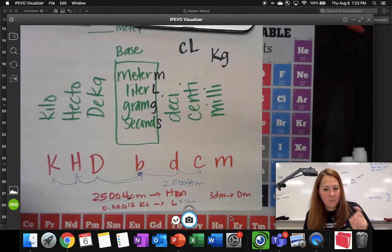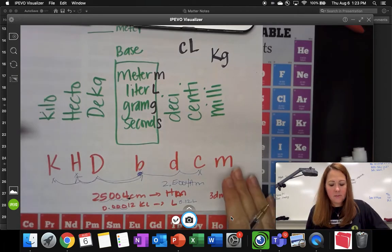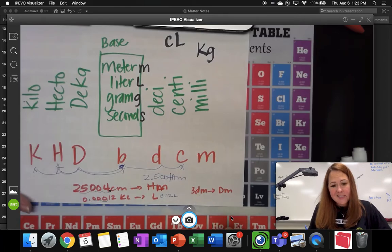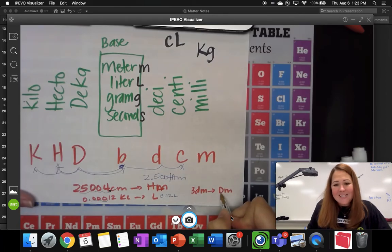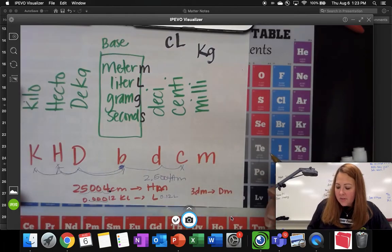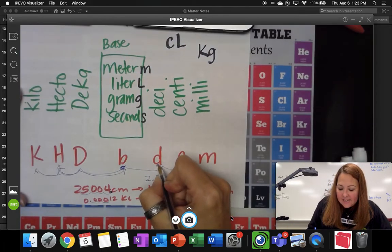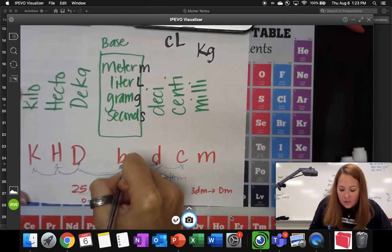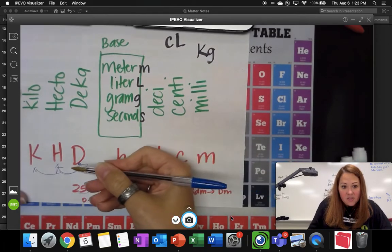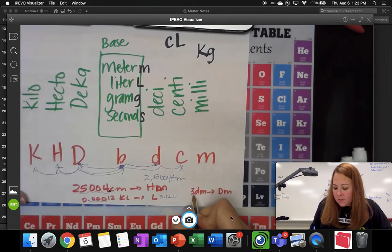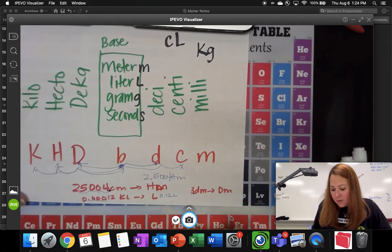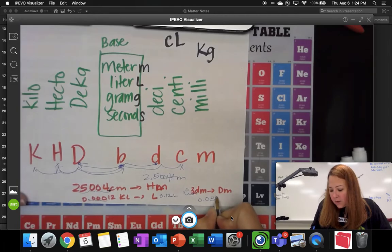Move your decimal place the same direction, the same number of places. Now this one I have three lowercase d. Lowercase d is desi. And I'm going to deca, which is capital D. So on this one, I'm going to start right here at desi. I'm going to end down here at deca. So I'm going to move my decimal place one, two times this way. One, two. So again, I'm going to start here with my decimal place. It's currently after the number three. I'm going to go one, two times. So your answer is 0.03 decameters.